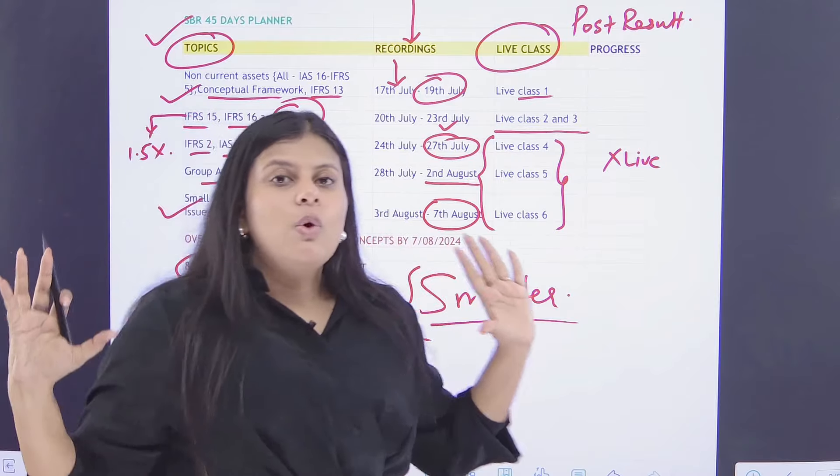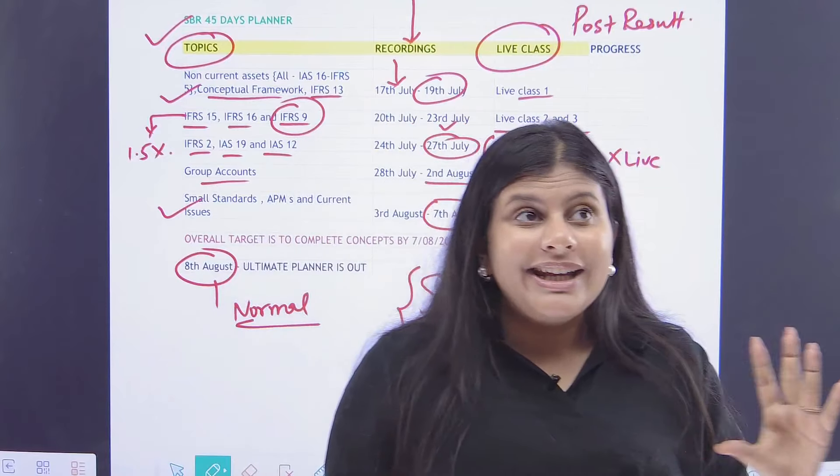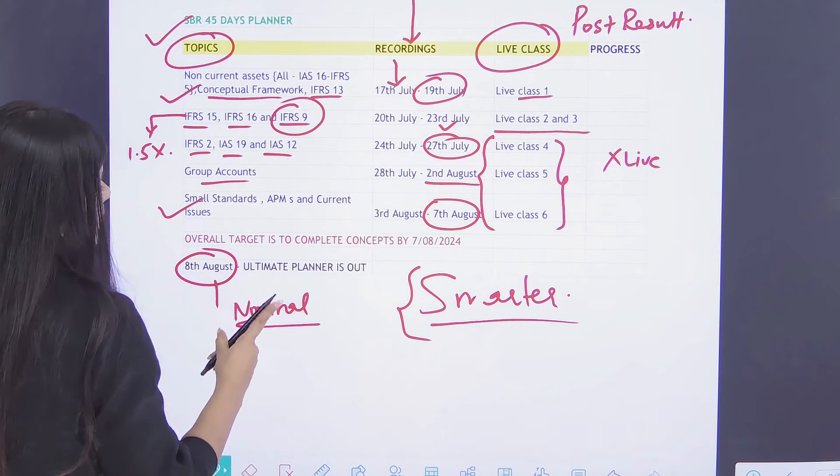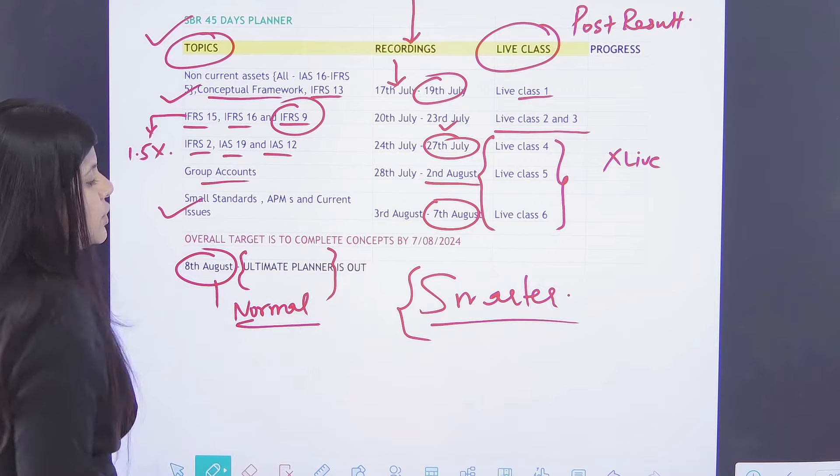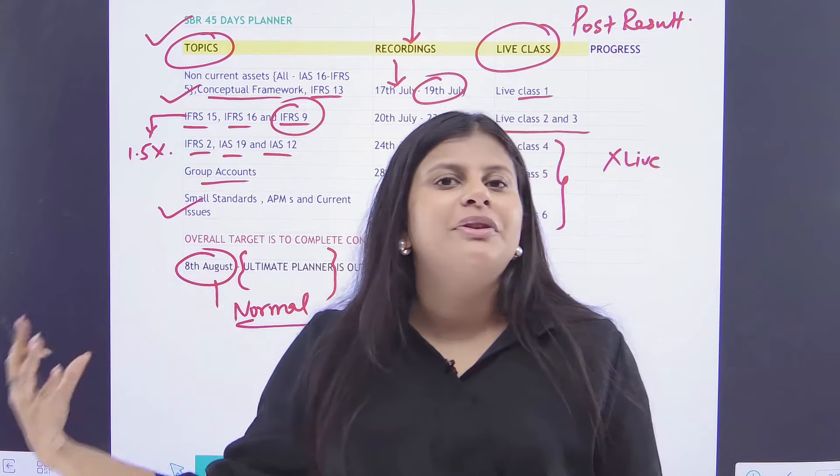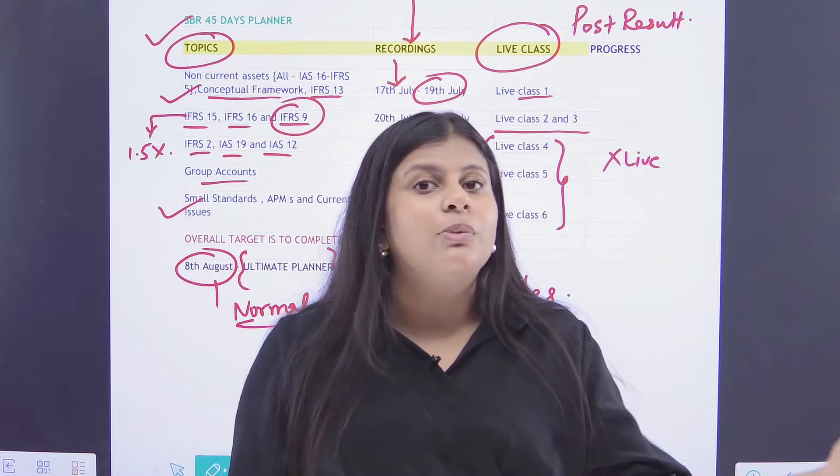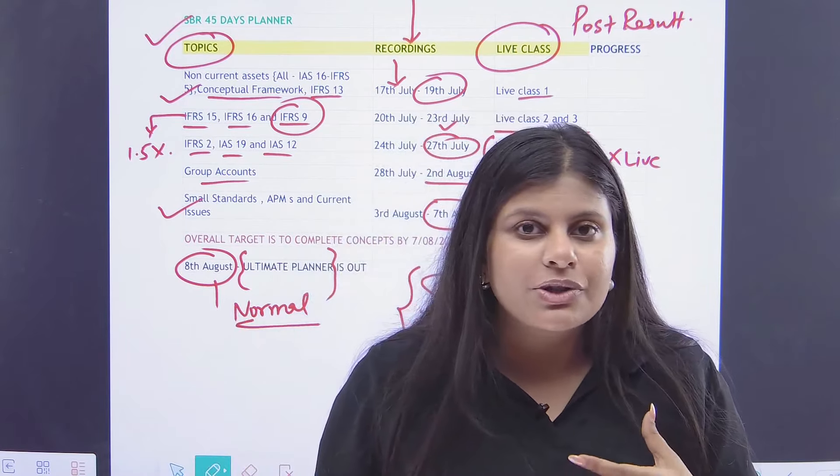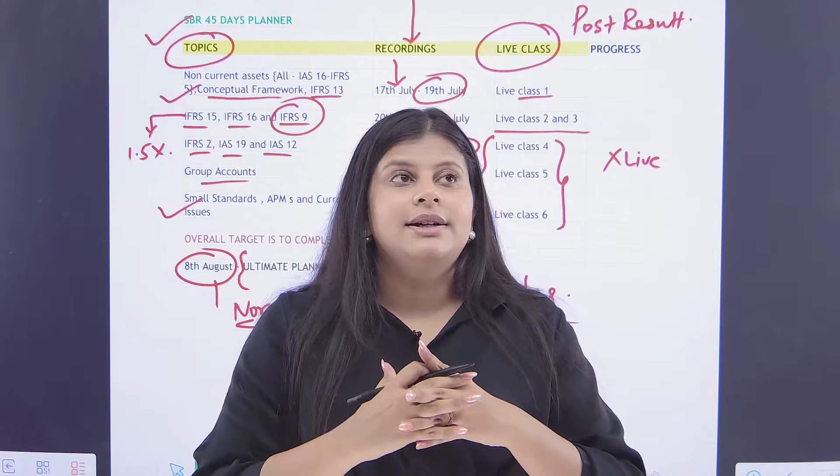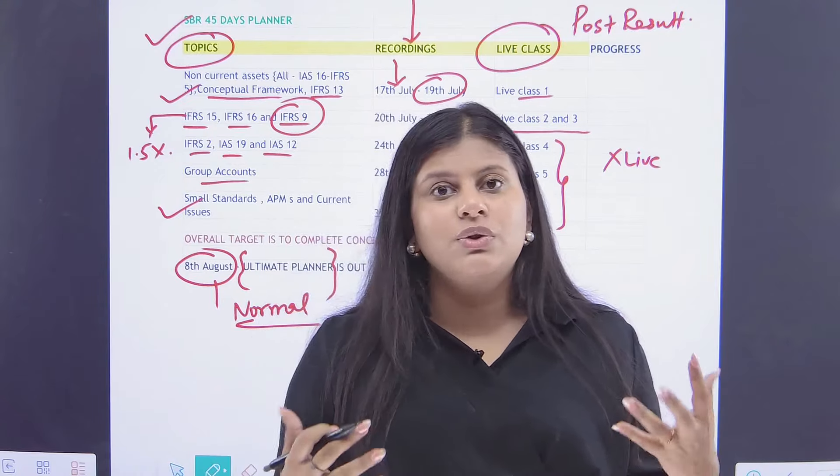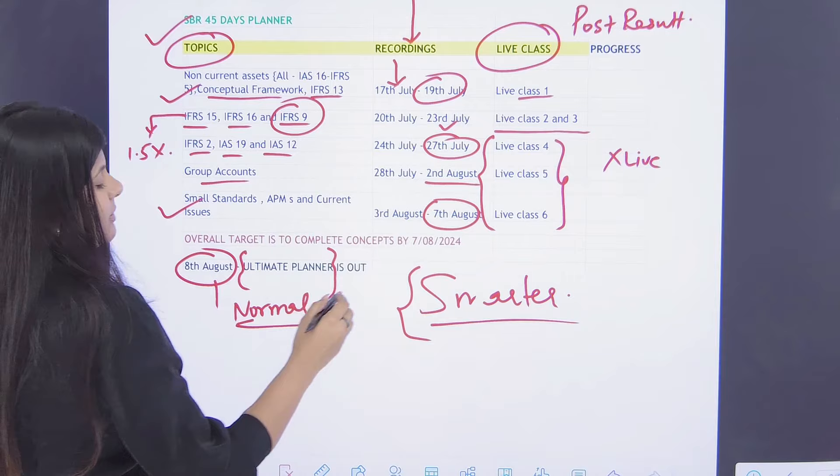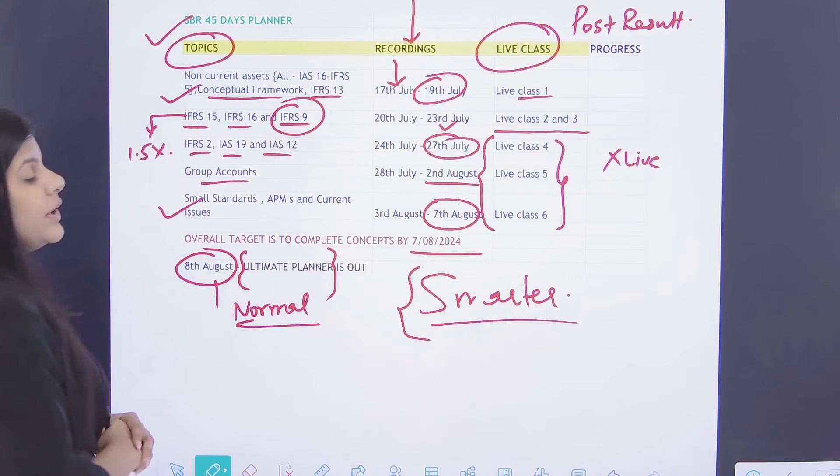So mainly if I talk about an overall target, I've not given you daily plan, even though for the students who are enrolled with me, you are going to get on 8th of August, you'll get an ultimate planner. So usually I share it on the YouTube also if you want to use it freely. So in ultimate planner, I give you an exhaustive plan of revision that each day, these are the questions you have to practice from your kit. So I give you the super 20 question list and I also give you everyday question practice list. So that becomes very exhaustive and very important as well. Many students pass by just using those resources as well. But overall concept is that our target is to complete the concepts by 7th of August.